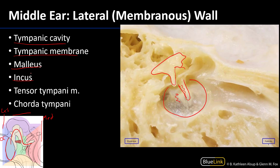There are a couple of interesting features to see here. Running anteriorly is part of the pharyngotympanic tube, also known as the Eustachian tube or the auditory tube. This passageway leads from the middle ear to the nasopharynx, and it is a means by which pressure can equilibrate between the nasopharynx and the middle ear.